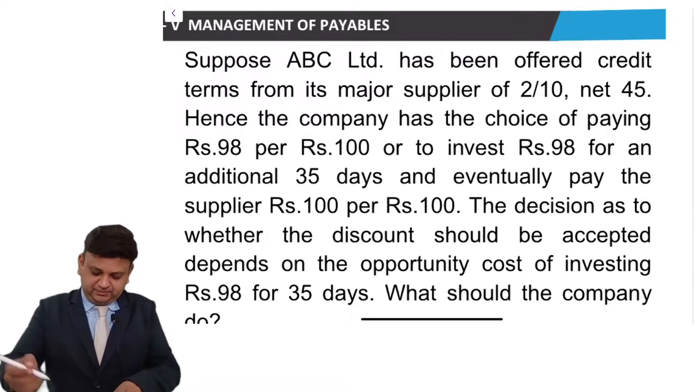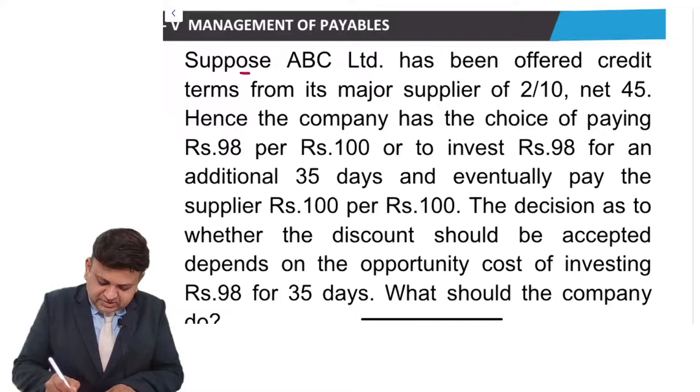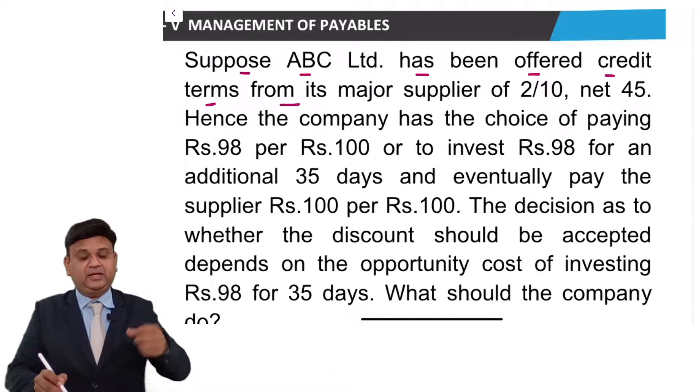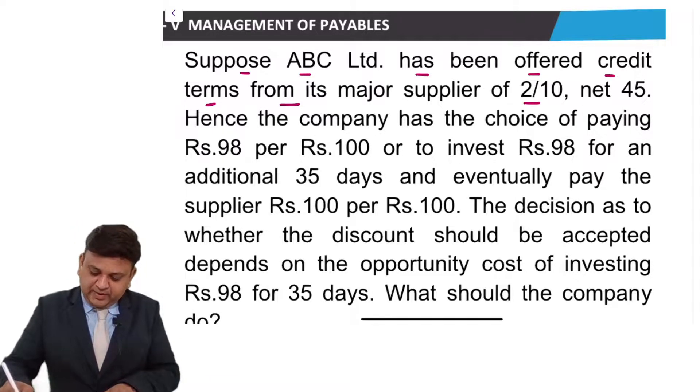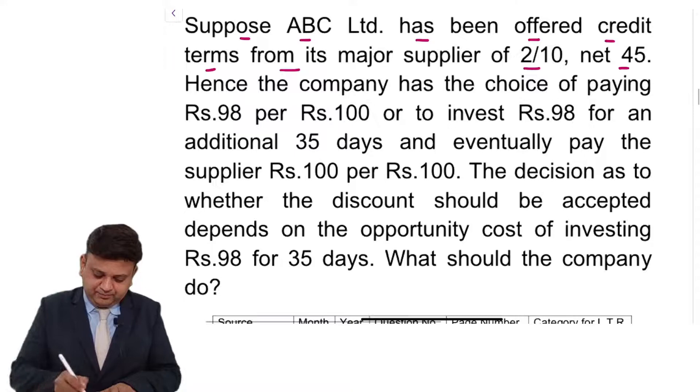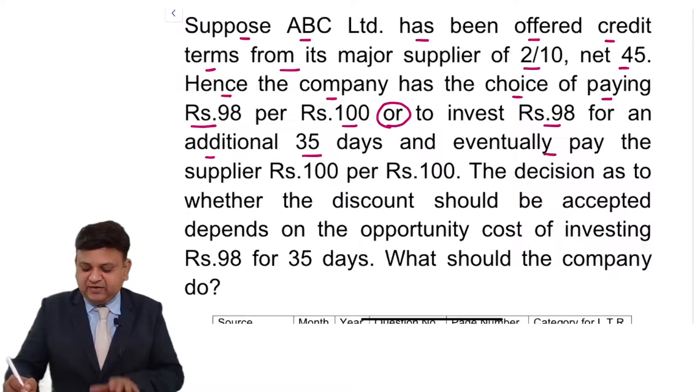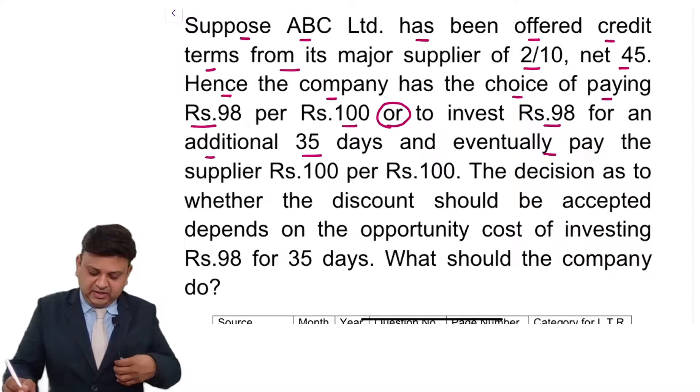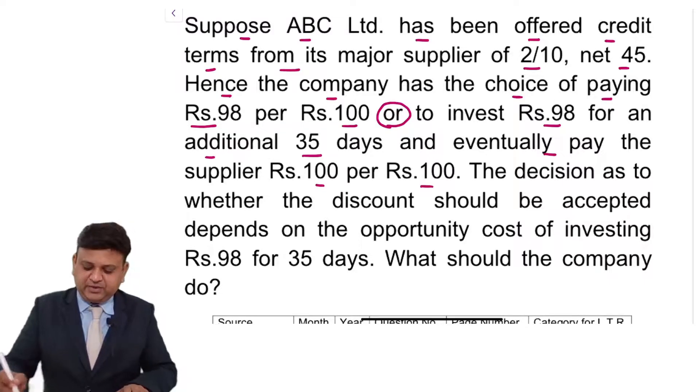Let us see the next question. Suppose ABC Limited has been offered credit terms from its major supplier of 2/10, net 45. Hence, the company has a choice of paying Rs. 98 per Rs. 100, or invest Rs. 98 for an additional 35 days and eventually finally pay the supplier Rs. 100 per Rs. 100.